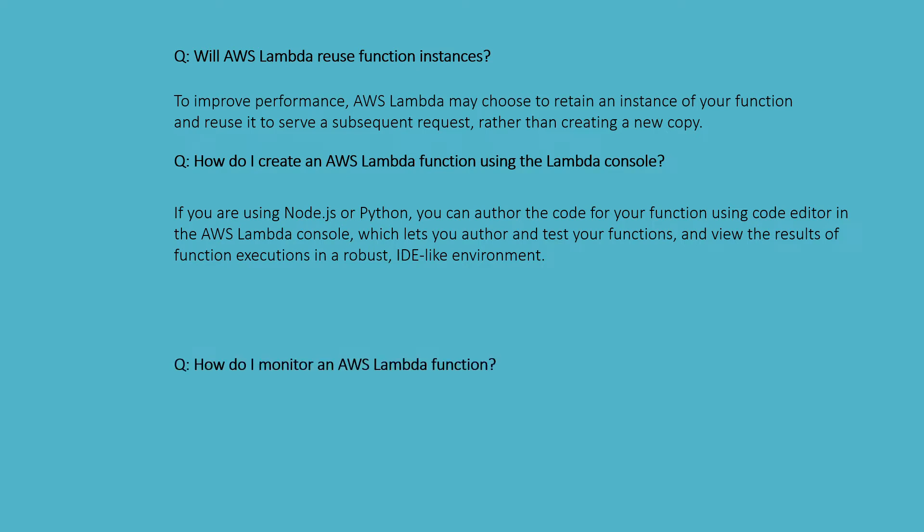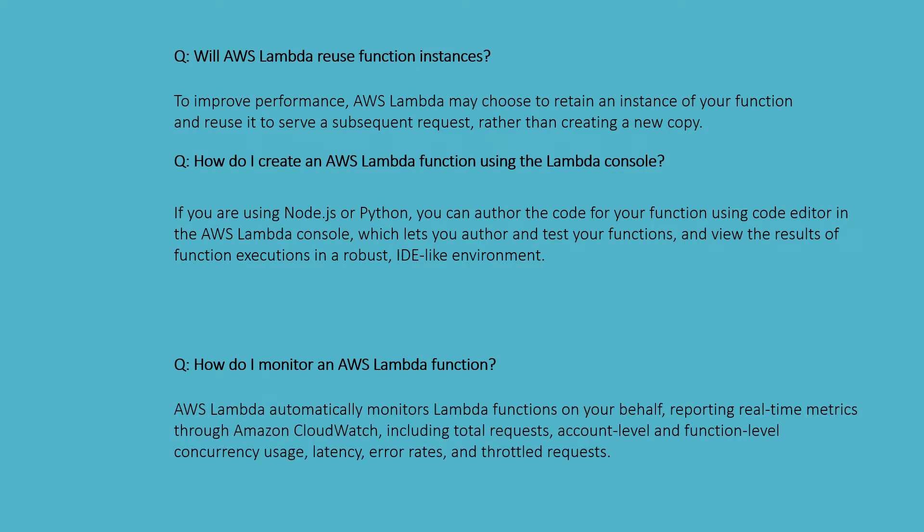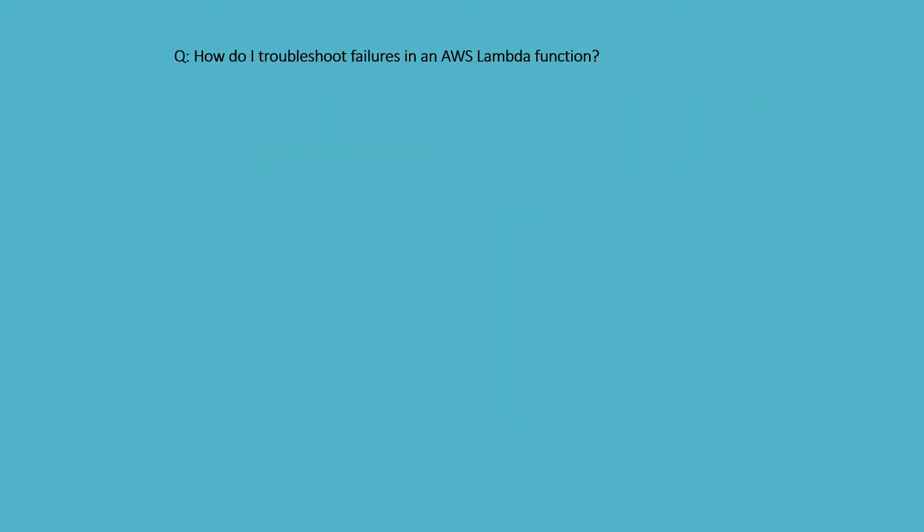How do I monitor AWS Lambda functions? AWS Lambda automatically monitors Lambda functions on your behalf, reporting real-time metrics through Amazon CloudWatch, including total request count, function-level concurrency, latency, error rates, and throughput data per request.